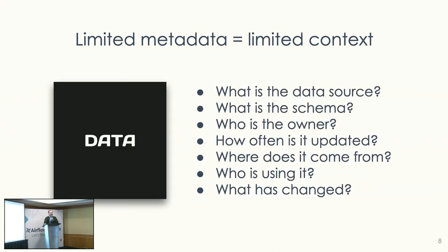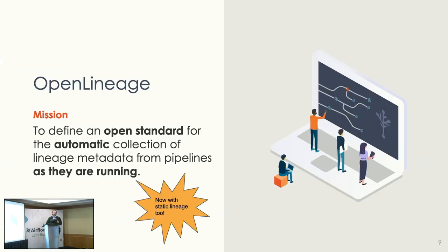With limited metadata, the questions we can ask go beyond just what produces or consumes data. We can ask: What's the data source? What's the schema? Who's the owner? Who's using it? How often is it updated? What has changed? Our mission is to define the open standard for the automatic collection of lineage metadata from data pipelines as they are running. Two key things to focus on: first, automatic; second, as they're running.